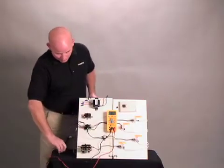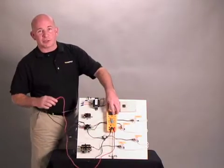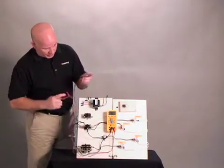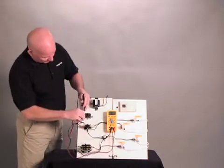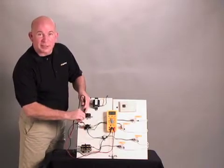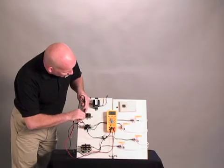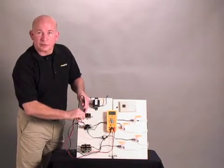To test the fan relay, set your meter to the lowest resistance level and you should read approximately 70 to 80 ohms of resistance. We're showing 79. It's good.